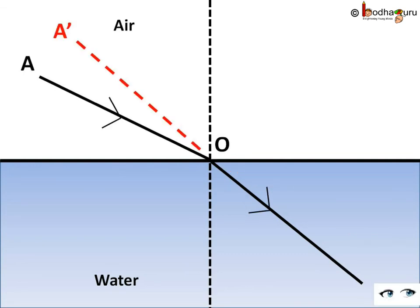In the reverse way, say light from point A is moving from rarer medium like air into a denser medium like water. Then at point O the speed of light decreases and the light would bend towards the normal. If we extend the light ray backwards, then the light will appear to come from point A dash instead of A.